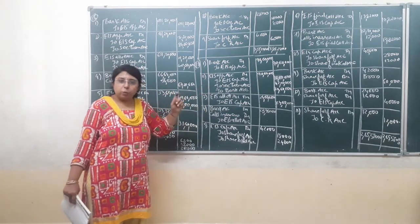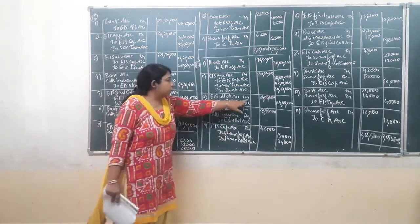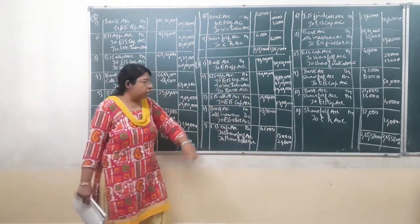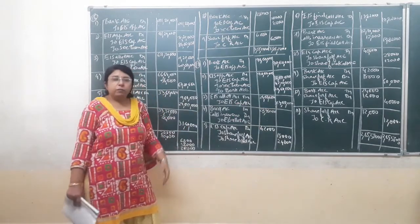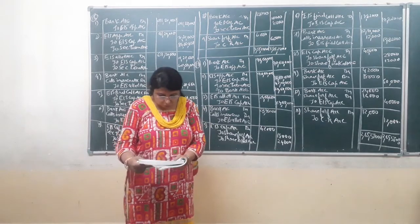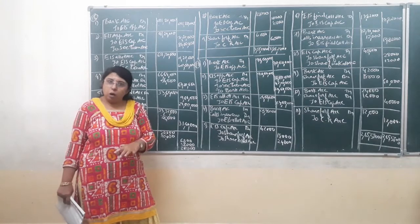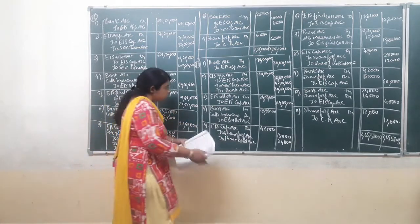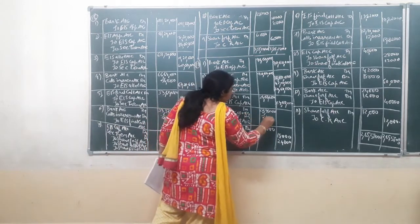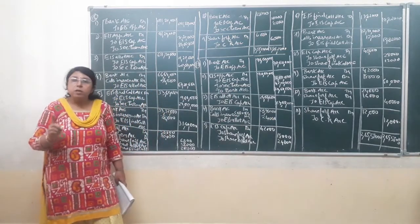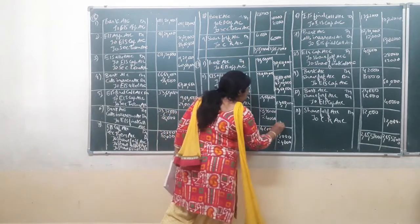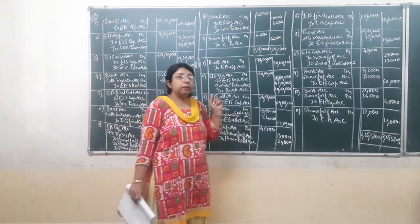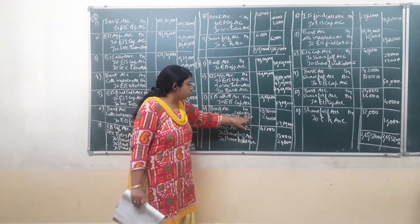Now moving to the next step of allotment. First the amount of allotment will be due: equity share allotment account is debited to equity share capital account credited. At allotment, only 6,00,000 shares at Rs. 4 per share — so 6,00,000 into Rs. 4 comes to Rs. 24,00,000. When receiving the allotment amount, one shareholder Siddharaj holding 6,000 shares has not paid the amount due on allotment. On 6,000 shares multiplied by Rs. 4, that is Rs. 24,000 not received. So calls in arrears account is debited by Rs. 24,000, and bank account is debited by the remaining Rs. 23,76,000.